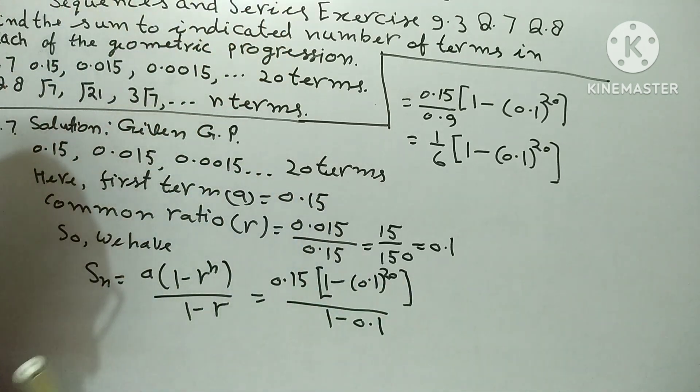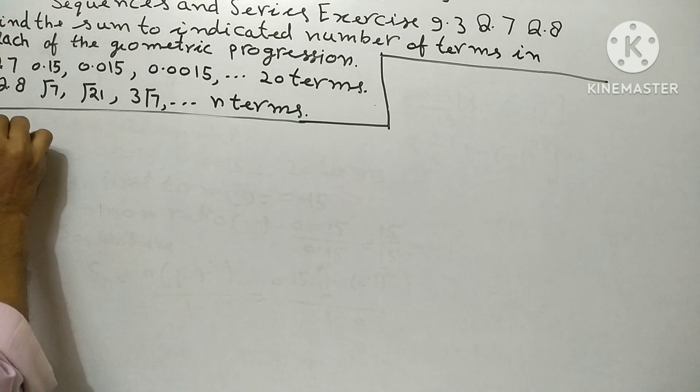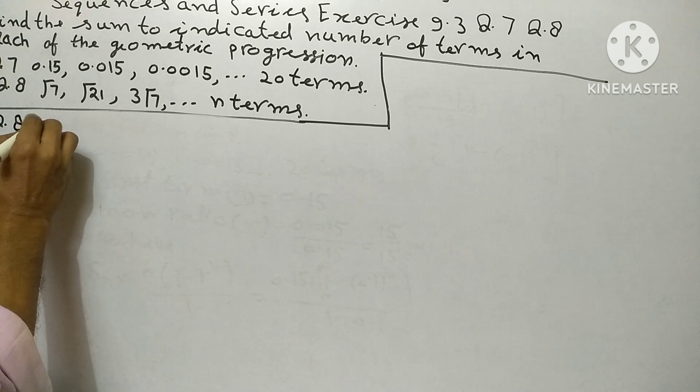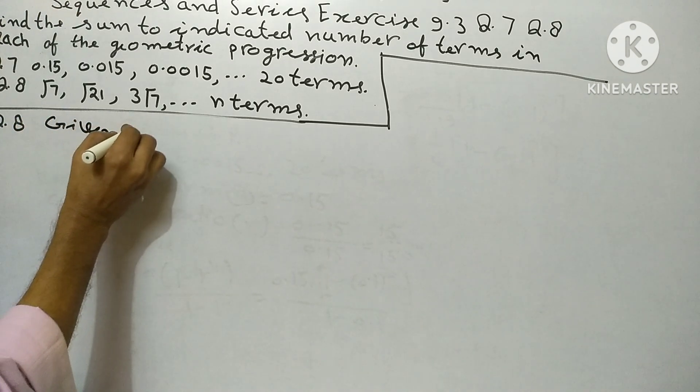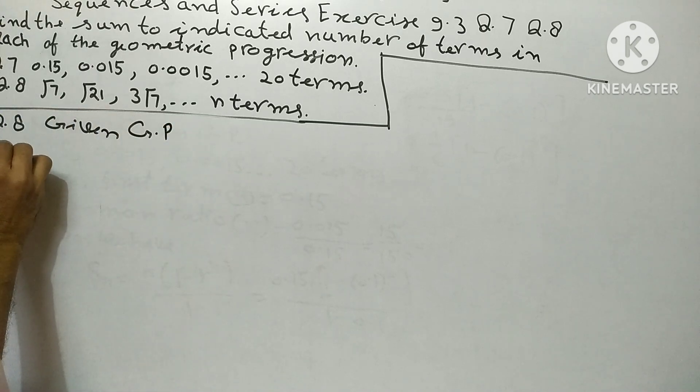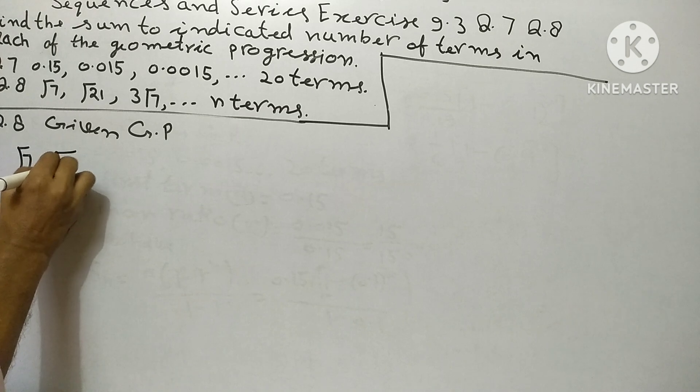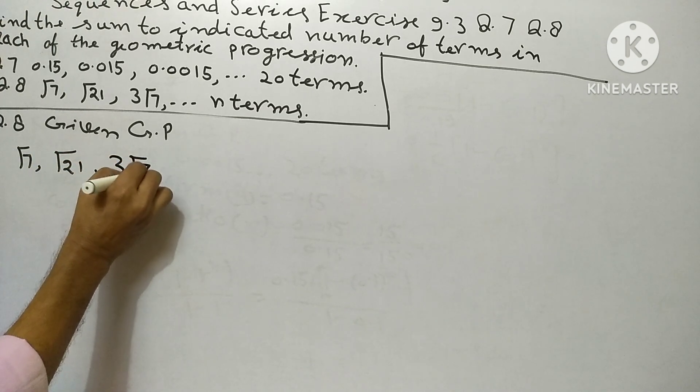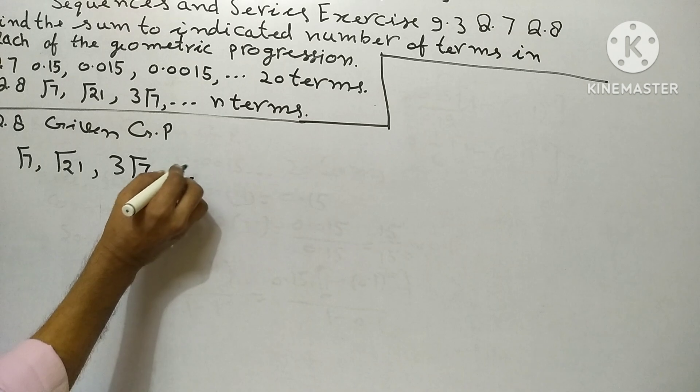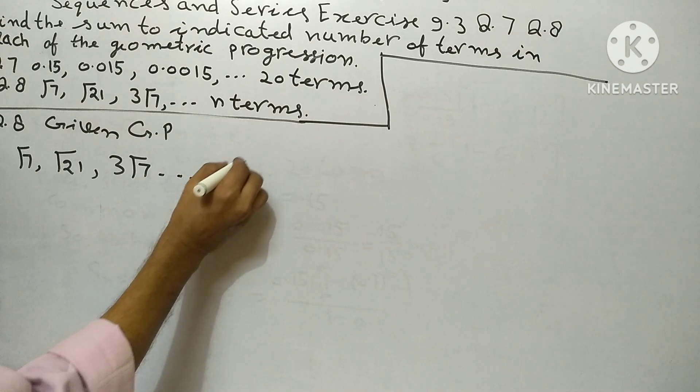Now question 8th. Given GP: root 7, root 21, 3 root 7, and so on, n terms.